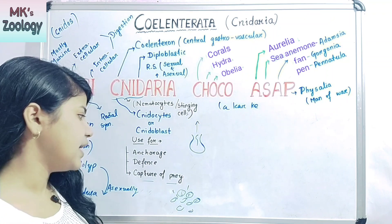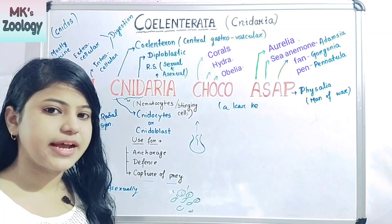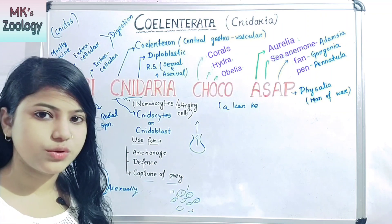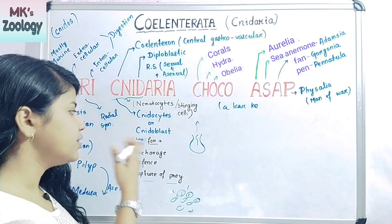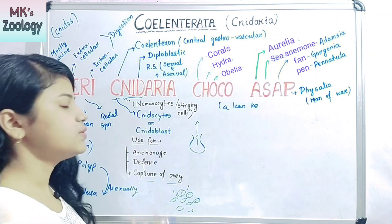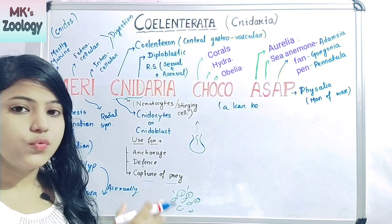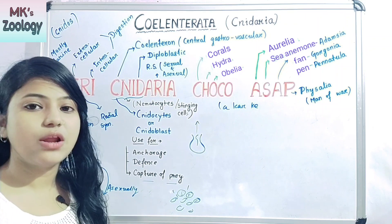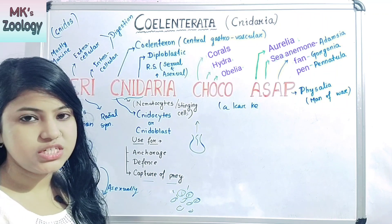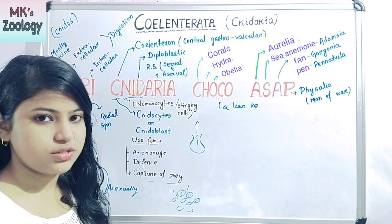The third function of cnidocytes is capture of prey. The stinging cells try to capture food for the animal. This is the function of cnidocytes or cnidoblasts, which are made up of nematocytes or stinging cells. This is a peculiar feature that belongs only to phylum Cnidaria or phylum Coelenterata — it does not belong to any other phylum.